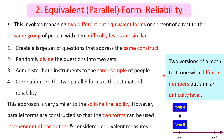For example, two versions of a math test — one with different numbers but with similar difficulty levels — are provided to a single group at a time. We correlate those two equivalent tests and obtain the reliability.